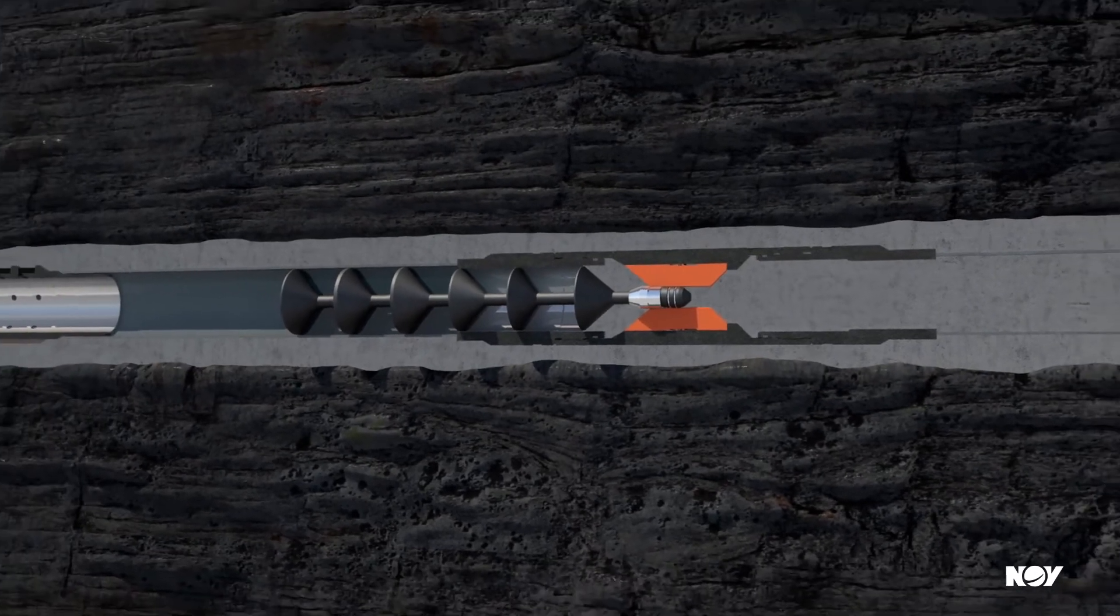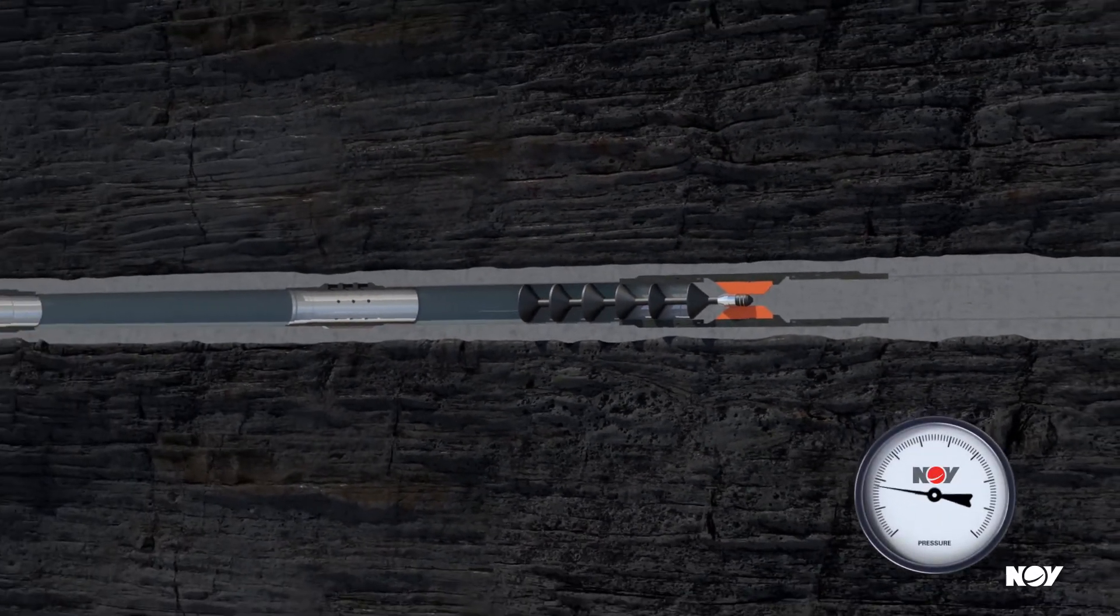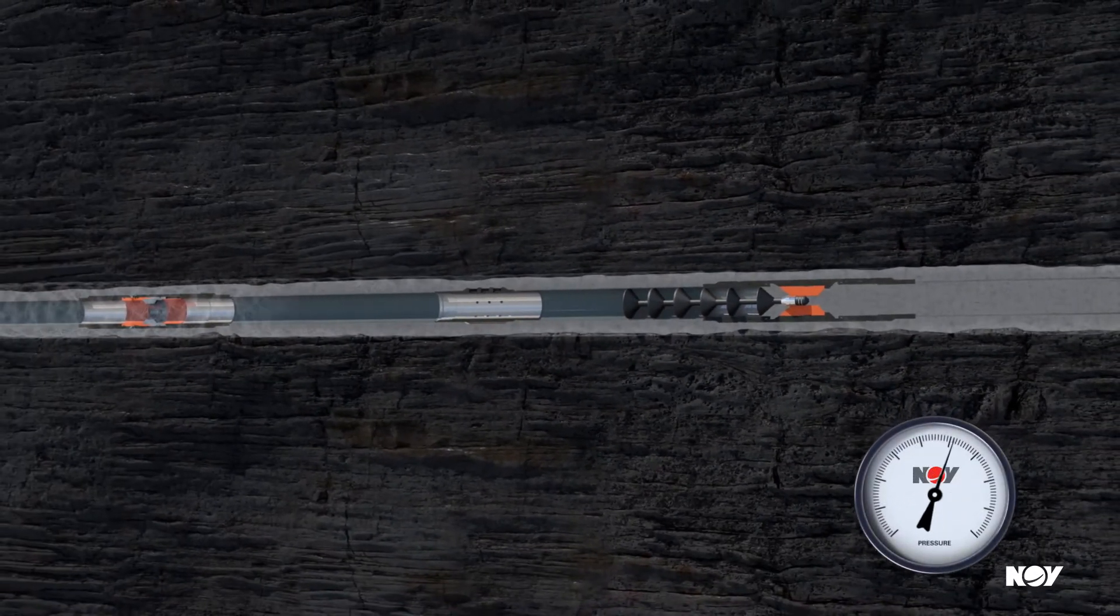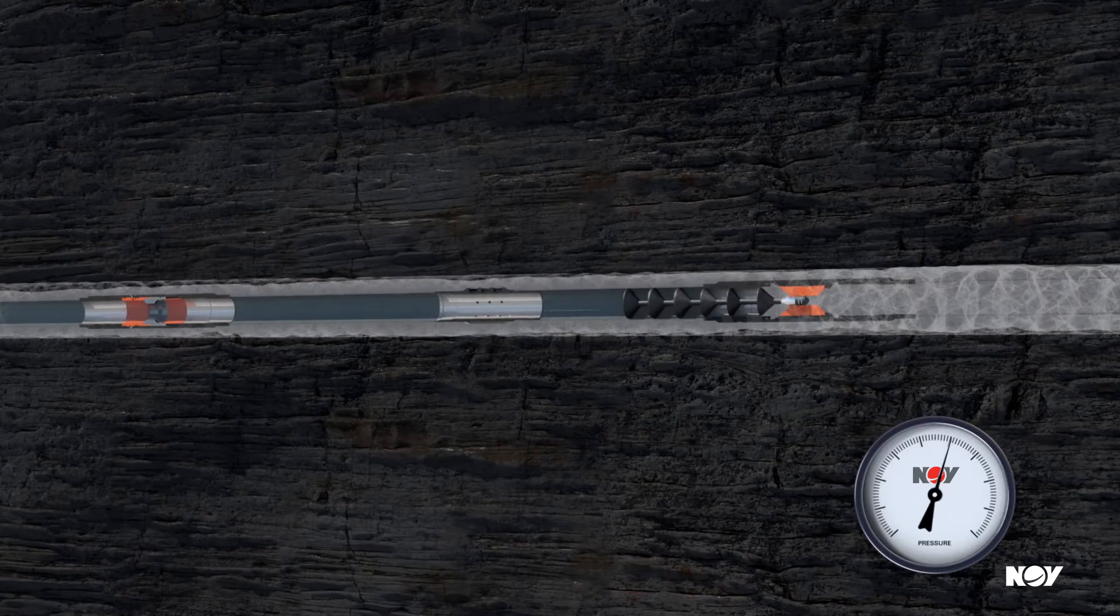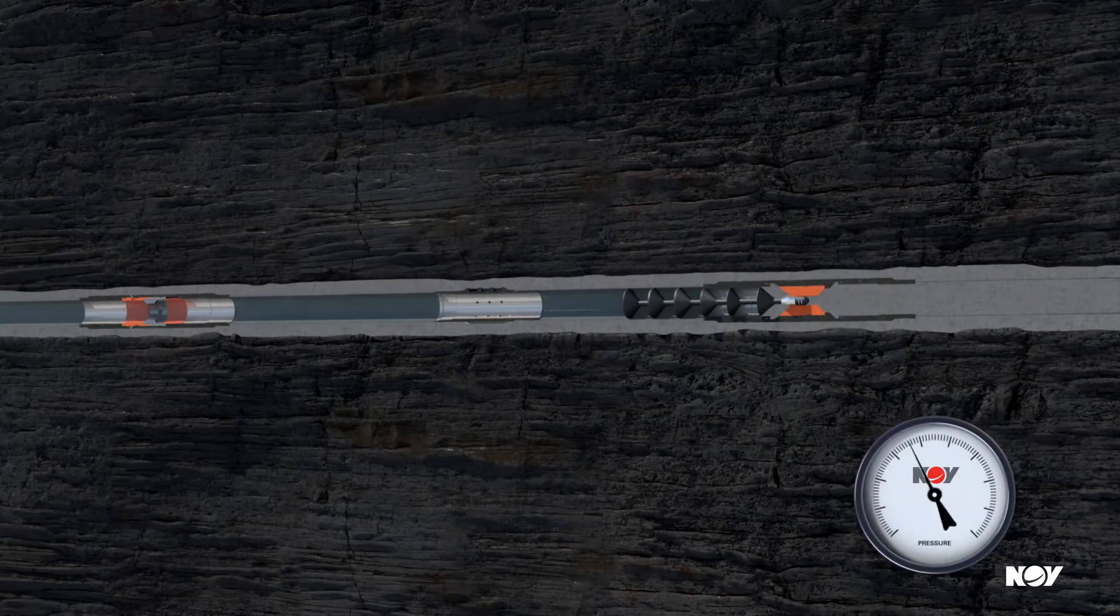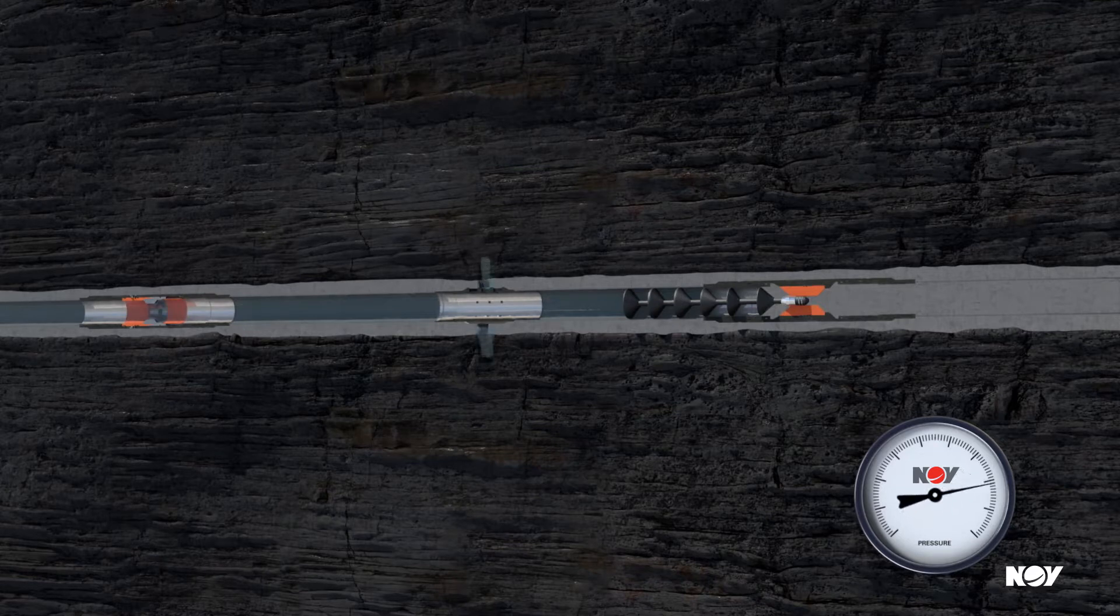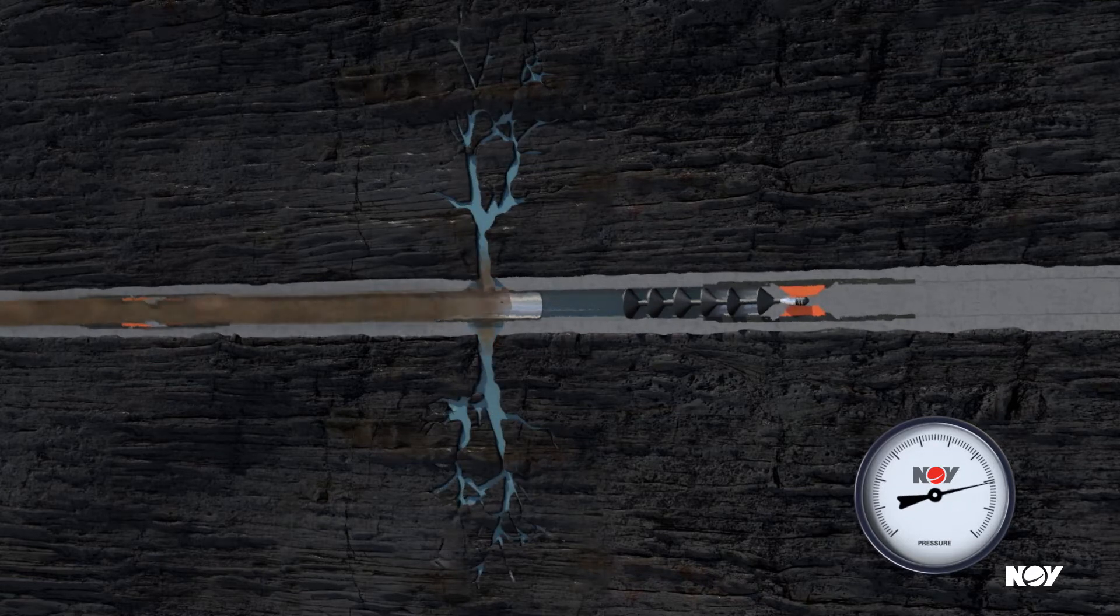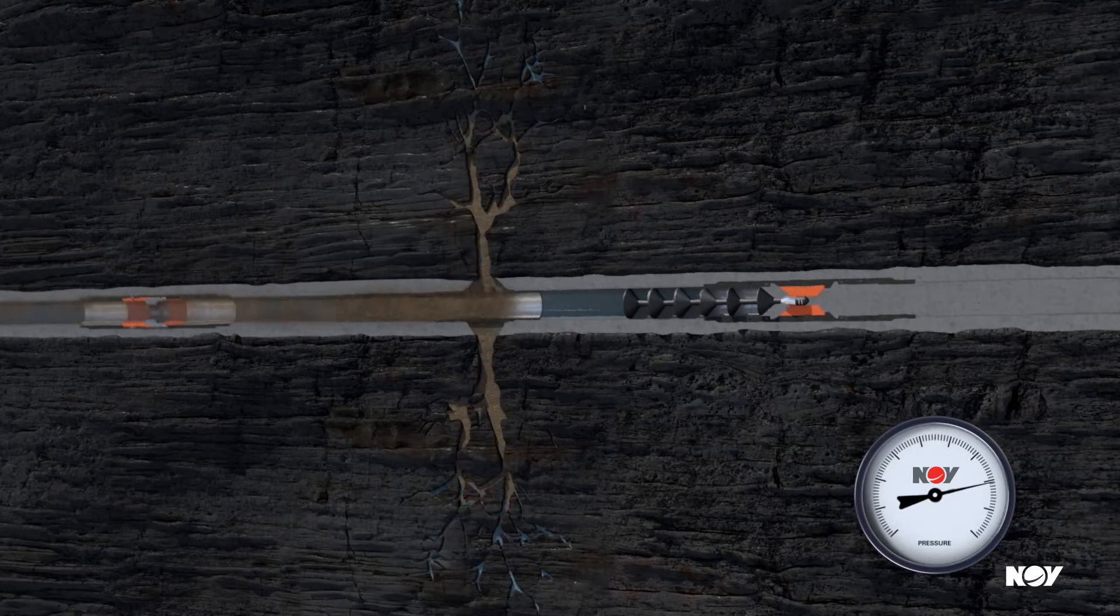Prior to fracturing the well, a pressure integrity test is performed on the casing. The toe initiation valve is opened, allowing communication to the formation as well as the first stage of the frac stimulation if required.